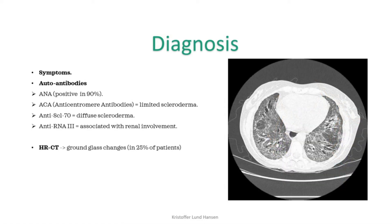To test for lung involvement, we use high-resolution CT. 25% of patients have some visible changes, and the most typical change is what is called ground glass changes. As seen in the picture here, it is nicely visible as both lungs have so much fibrosis that it gives an appearance of many tiny pieces of glass.